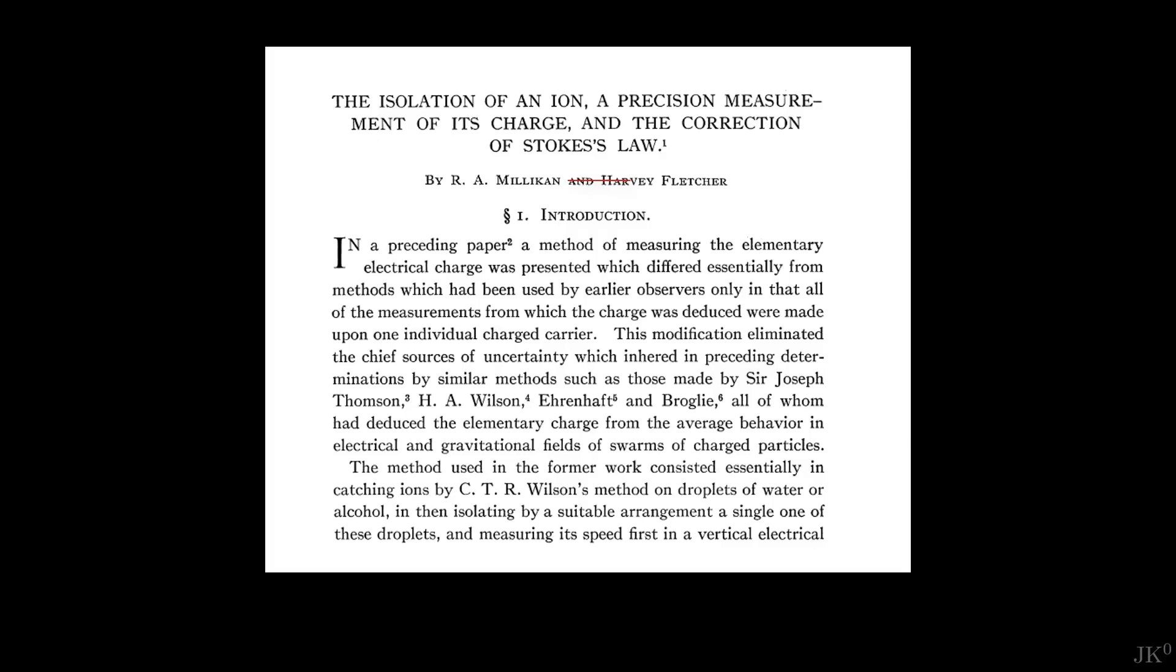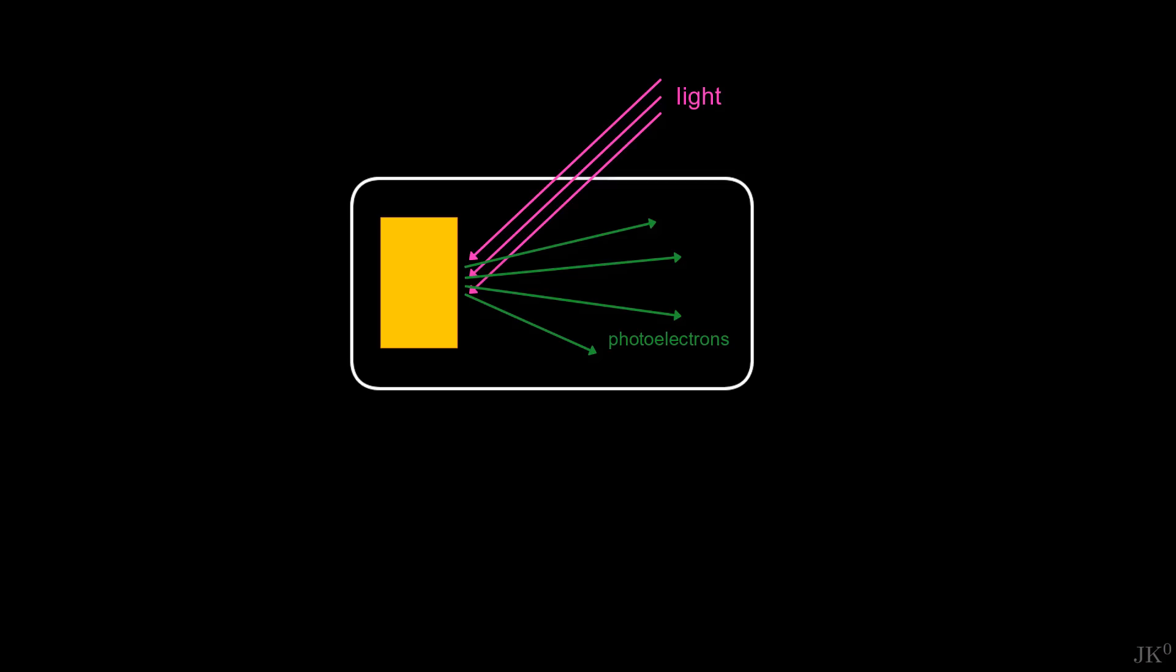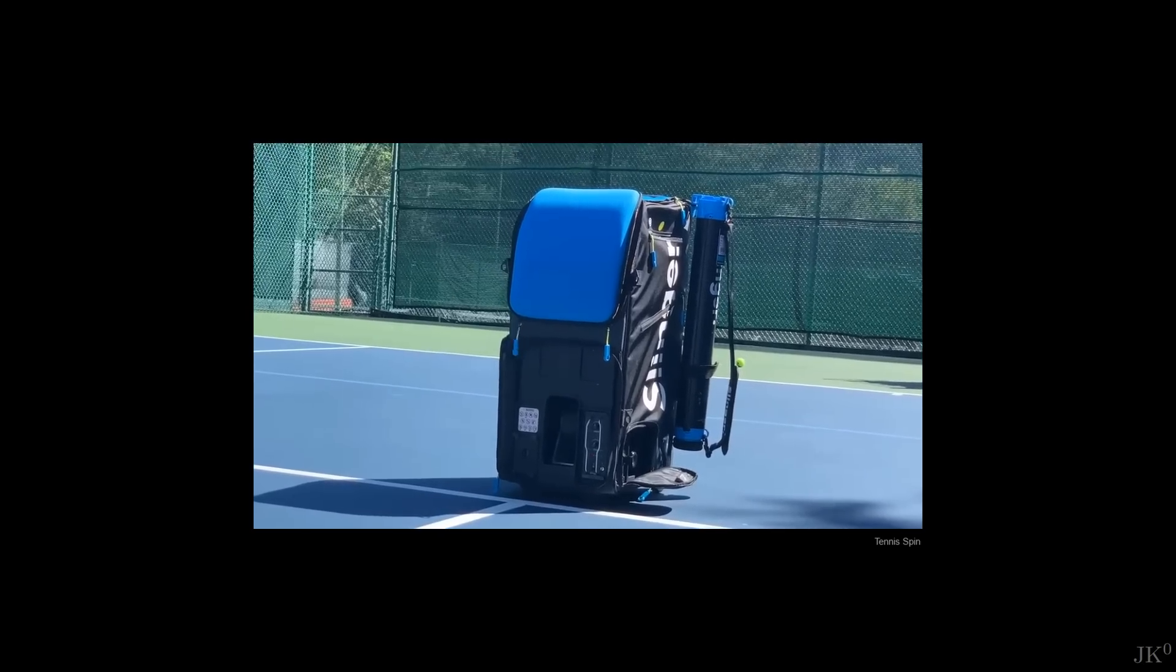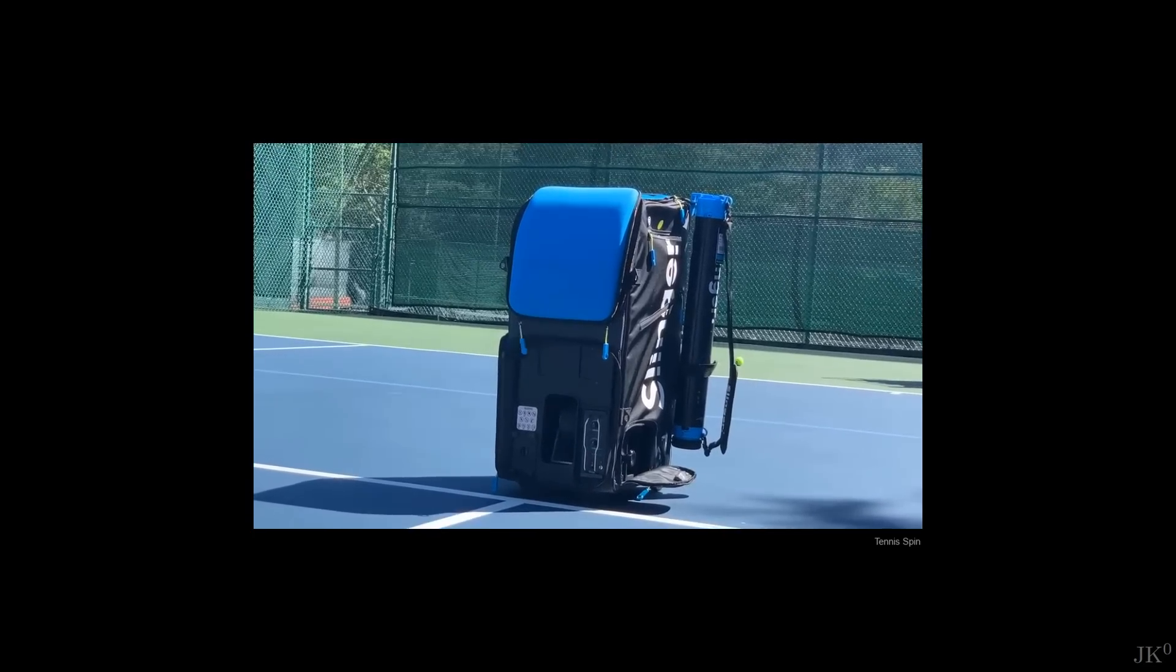Although he is the sole author of the paper, he acknowledged his graduate students and his skilled technician named Julius Persson. Another advantage was that Millikan's apparatus allowed him to scan a wide range of frequencies compared to previous experiments. This was the ninth iteration of his device. To measure the kinetic energy of the photoelectrons ejected from the metal, he applied a voltage to stop them.